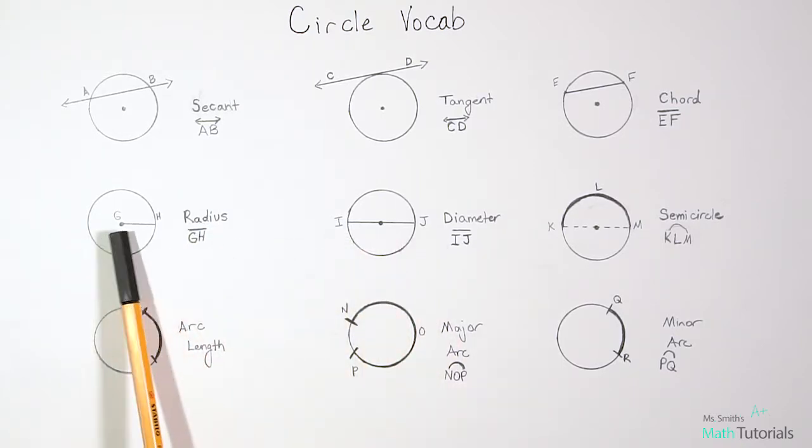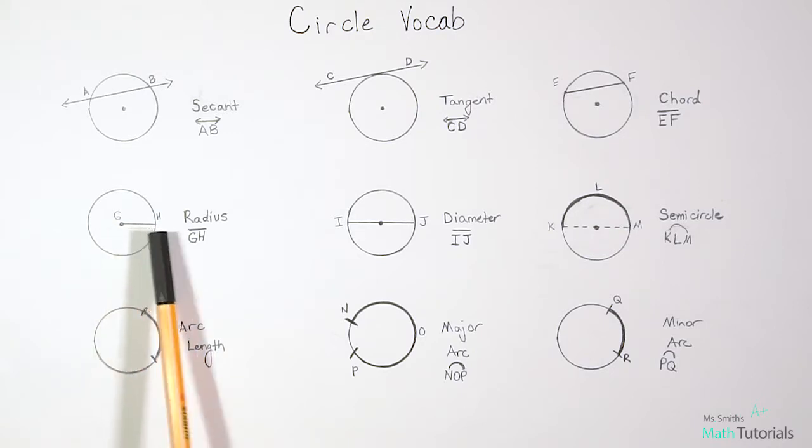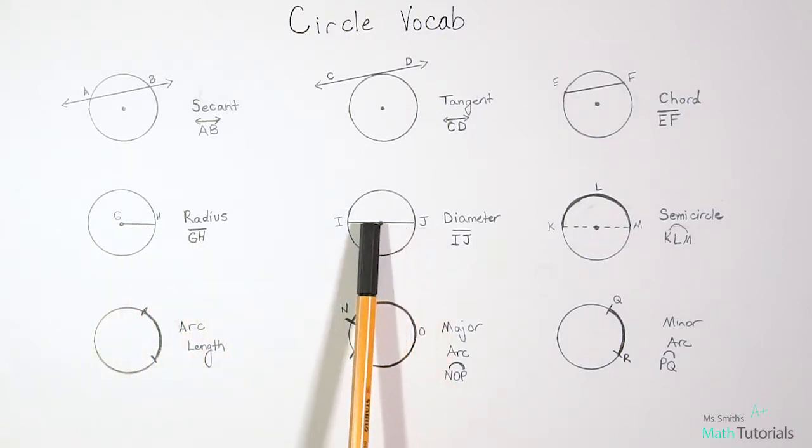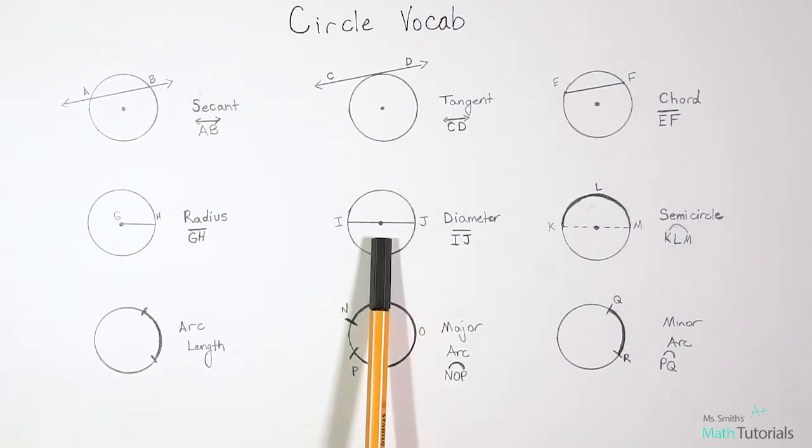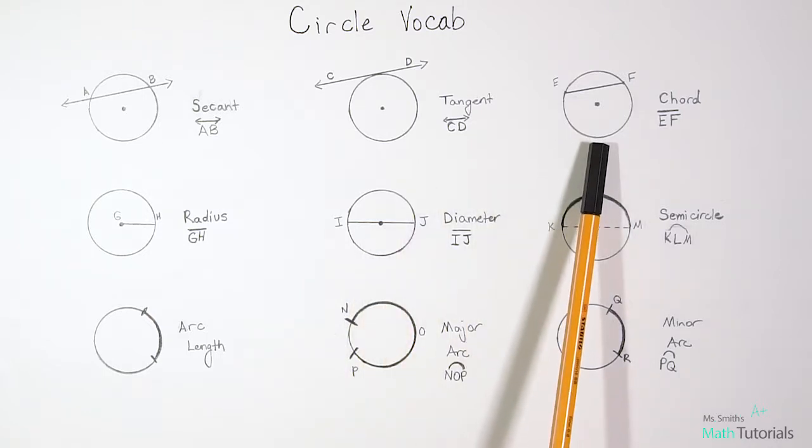For this one, notice it's similar to a radius, but this time instead of just being half the circle, it's the full length across the circle. It's very important to note it crosses through the center of the circle, and that's what differentiates it from a chord, which does not cross through the center of the circle.